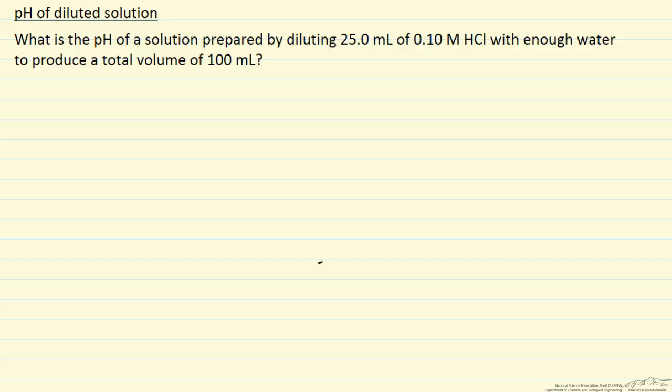In this problem we are asked to calculate the pH of a solution that we prepare by starting with 25 mL of a tenth molar HCl solution, and then we add enough water so that our final volume is 100 mL.